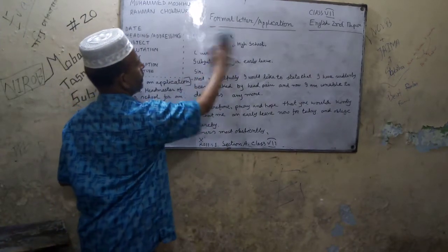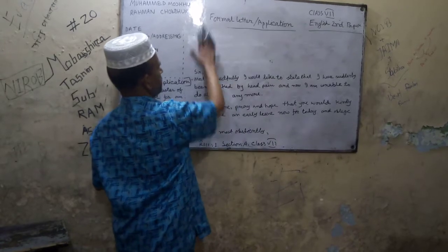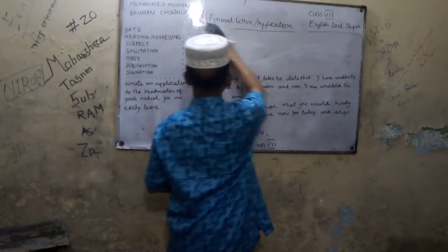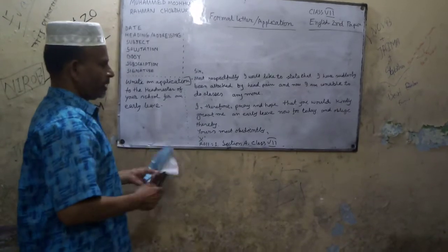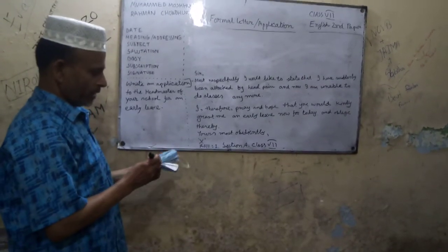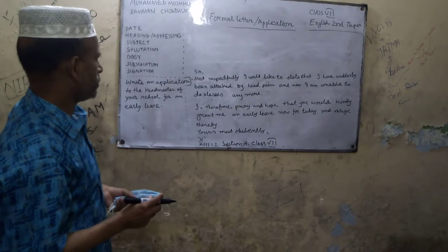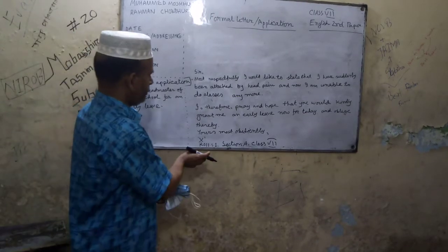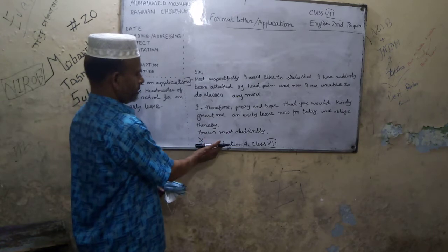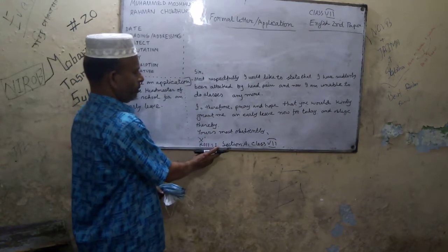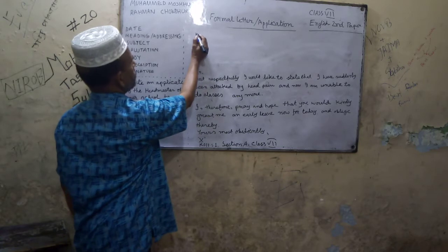Now we are going to write the rest of the signature portion. The next step is: X — your name — Roll Number 1, Section A, Class 7, with 10 marks allotted.